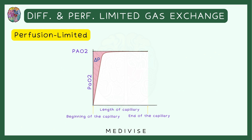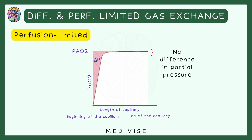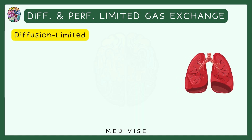Now let's look at this graph. On the x-axis, you can see the length of the capillary — the starting point is the beginning and the end point is the end of the capillary. On the y-axis, you have the partial pressure of oxygen in the capillary. In the beginning of the capillary, there is a partial pressure gradient, so the gas quickly moves from the alveolus into the capillary. But then for the next three-quarters of the capillary, there is no partial pressure difference, so the gas stops diffusing. This is the perfusion limited gas exchange.